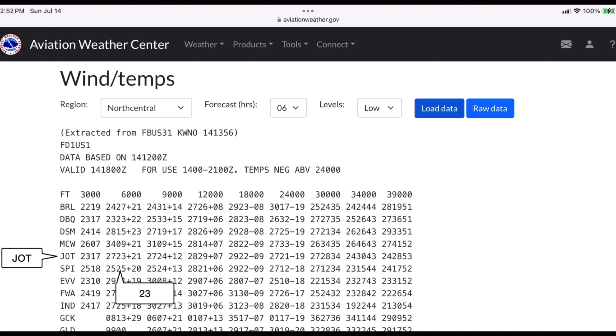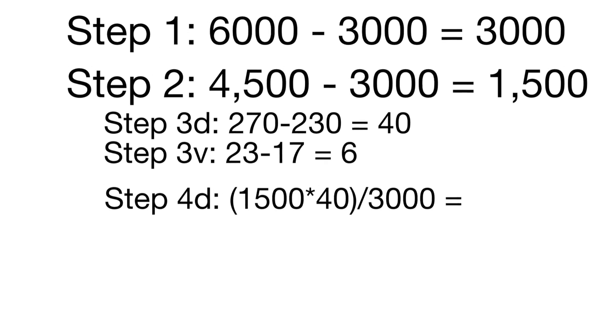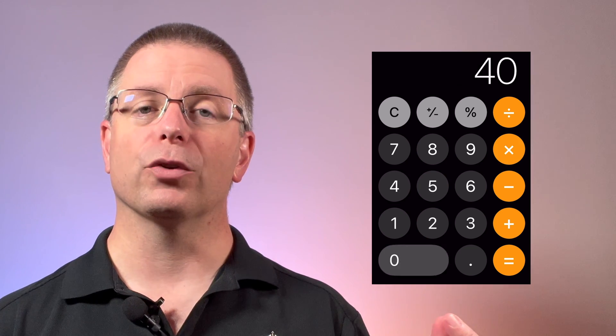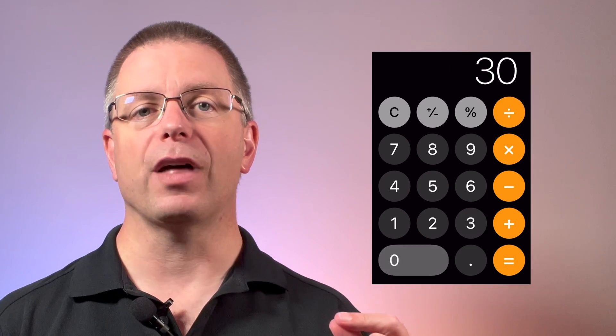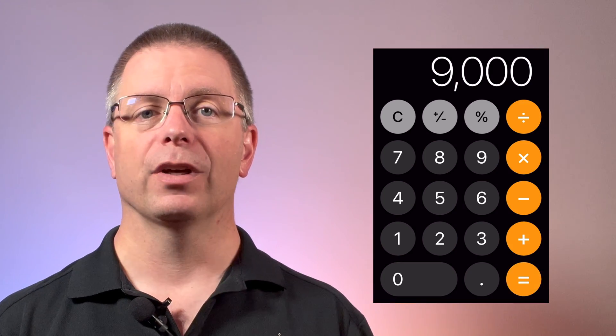The difference in velocity is 23 minus 17, or 6 knots. In step 4, we'll set up two equations — one for direction and one for velocity — and then solve both. The direction equation is 1,500 times 40 divided by 3,000, which equals 60,000 divided by 3,000, giving a direction difference of 20. The velocity equation is 1,500 times 6 divided by 3,000, so 1,500 times 6 equals 9,000, and dividing by 3,000 leaves a velocity difference of 3.